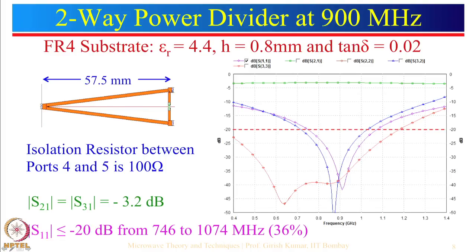Now let us look at the isolation between ports 2 and 3. The isolation curve is slightly shifted compared to the minima of the reflection coefficient curve. The reason is that this particular length is not 0 — it has a finite length. So at the frequency where the path is 180 degrees, the other path is not 0, and perfect cancellation takes place at a slightly different frequency.